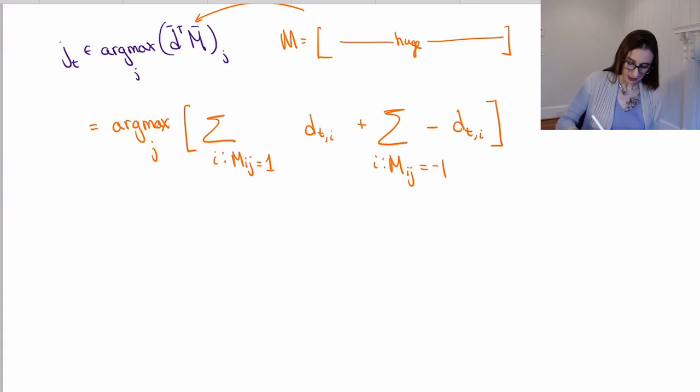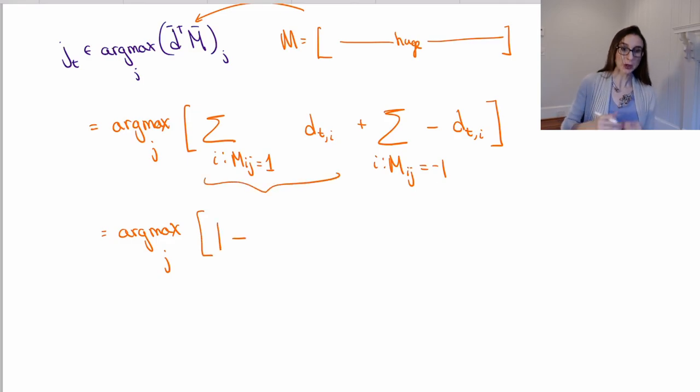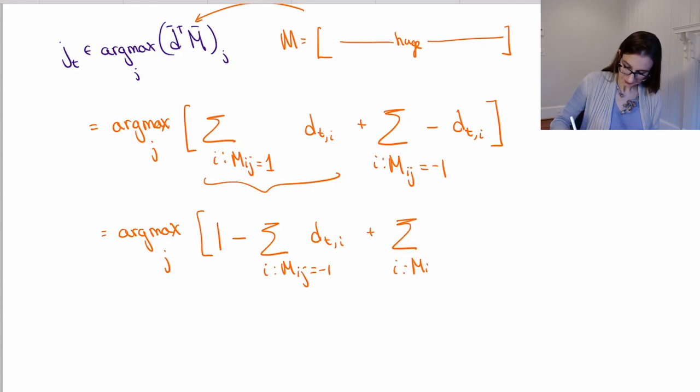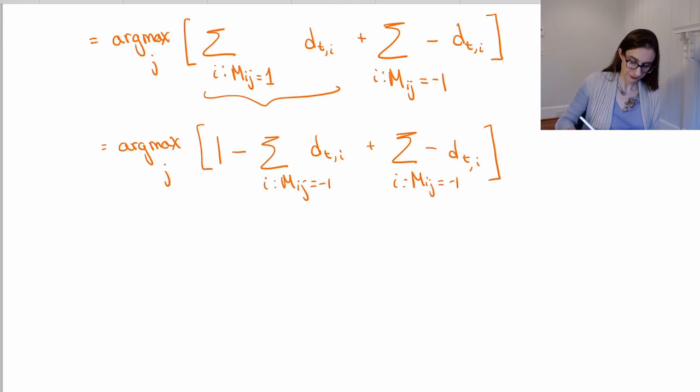Okay, so I can make this simpler. It's argmax over j. And then this is one minus, okay, this thing, remember all the weights add up to one. So if you add up the positive weights, that's the same as one minus all the negative weights. Okay, so one minus sum over i such that M_ij is negative one, and then this is d_ti. And then this term, interestingly, is exactly the same.